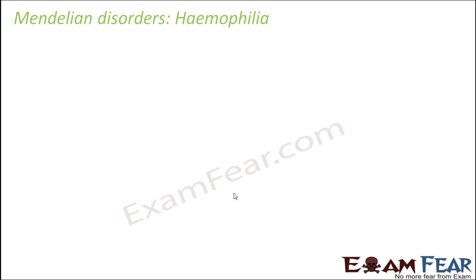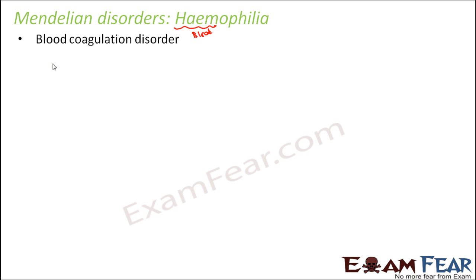Let us start with hemophilia. The word 'hemo' is related to blood, so there is some issue with blood in this disease. It is a blood coagulation disorder — with this disorder, the blood does not coagulate. Normally, if you get a small cut, your finger bleeds for a few minutes but then the bleeding stops because a blood clot forms. But in case of this disorder, if a small cut occurs, the bleeding will happen and it will keep on happening — it will never stop. So blood coagulation doesn't happen correctly.